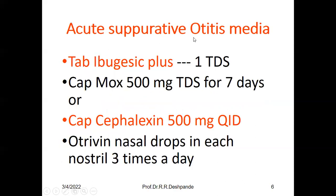Treatment: analgesics and anti-inflammatory drugs — NSAIDs (Non-Steroidal Anti-Inflammatory Drugs) like ibuprofen. Capsule Mox (generic name: amoxicillin) 500 mg three times a day for seven days. Do not stop any antibiotic haphazardly, as that may give rise to antibiotic resistance — meaning the medicine will not help when given next time. Alternatively, capsule cephalexin 500 mg four times a day, and xylometazoline nasal drops in each nostril three times a day.